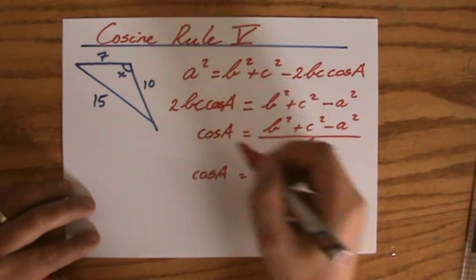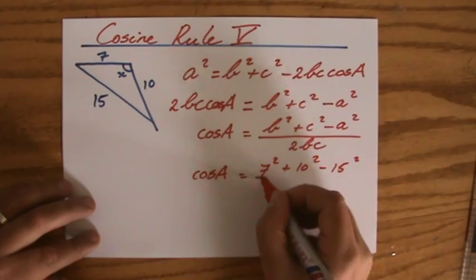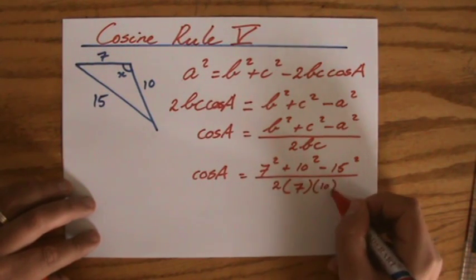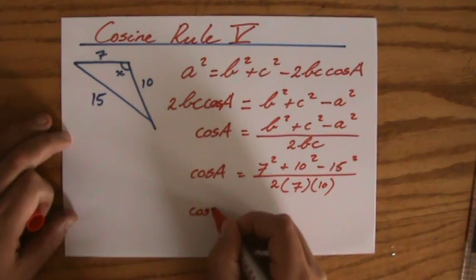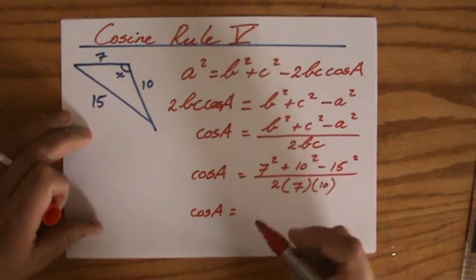7 squared plus 10 squared minus 15 squared. That's the important one. Divided by 2 times 7 times 10. Or the other way around. Leave it up to you. Now you can get your calculator out if you like. But where's the fun? Where's the fun if you let the calculator do all the work?